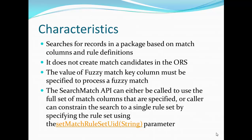It searches for records in a package based on match columns and rule definitions. It does not create match candidates in the ORS. We know that for the match job, we have the empty search table and the tokenization table — the strip table. Whenever we use the Search Match API, it does not populate the strip or empty search table. It virtually creates the tokens and uses them to search existing records.